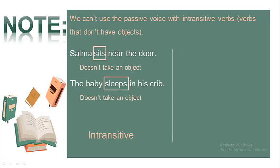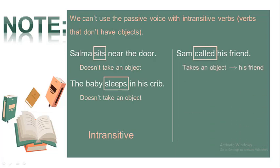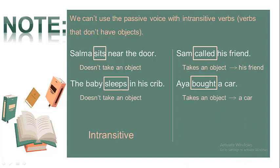On the other hand, we have verbs such as in: Sam called his friend. The verb called takes an object which is his friend, so his friend receives the action of calling. Another example: Aya bought a car. Bought is the verb which has a receiver which is a car — so bought takes an object. These verbs are called transitive verbs. Transitive means the verb takes an object. In this case, when the verb takes an object and has a receiver, we can use it in the passive form.